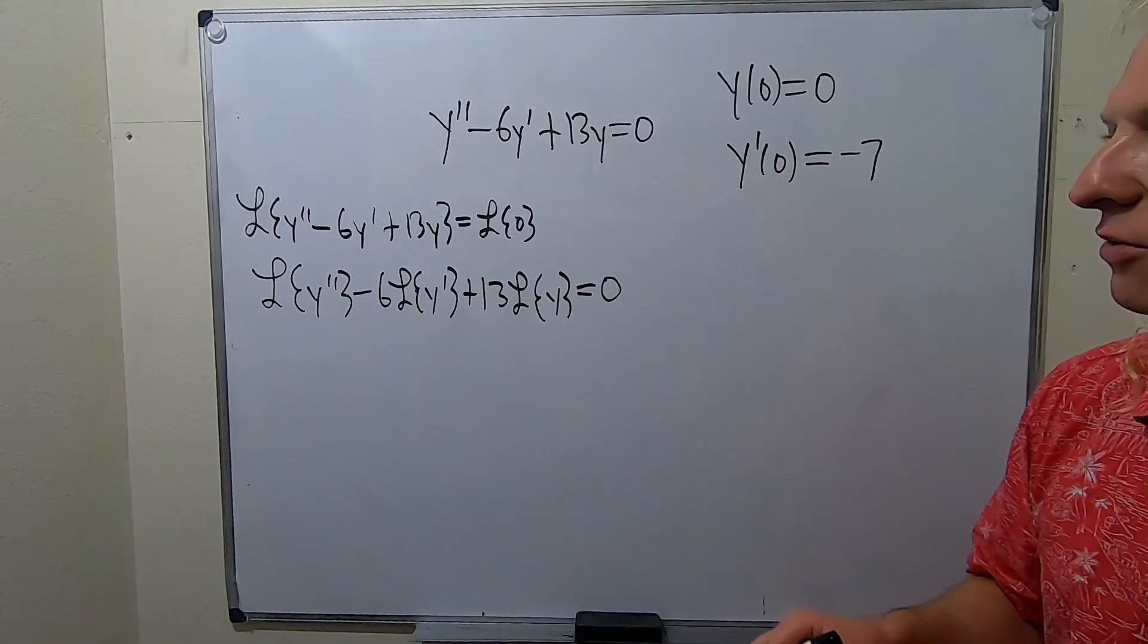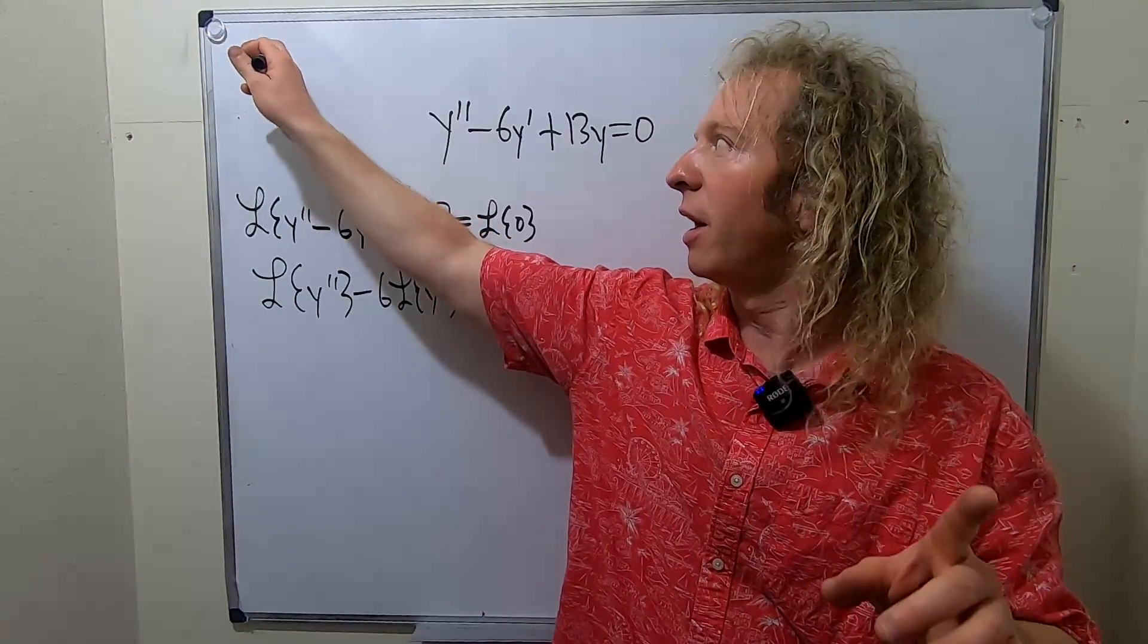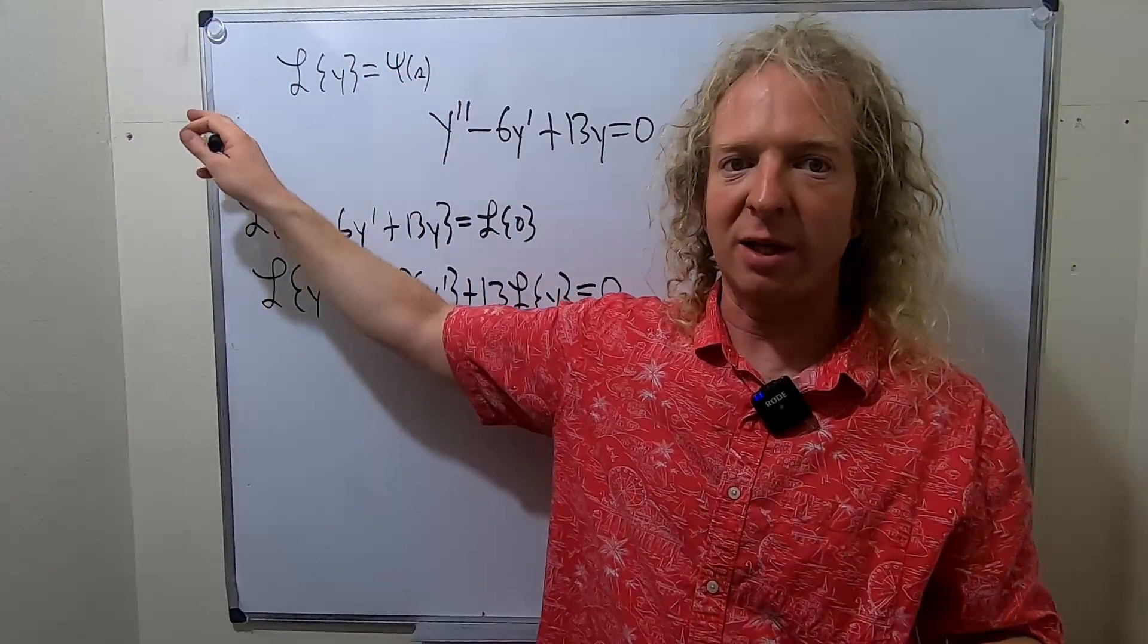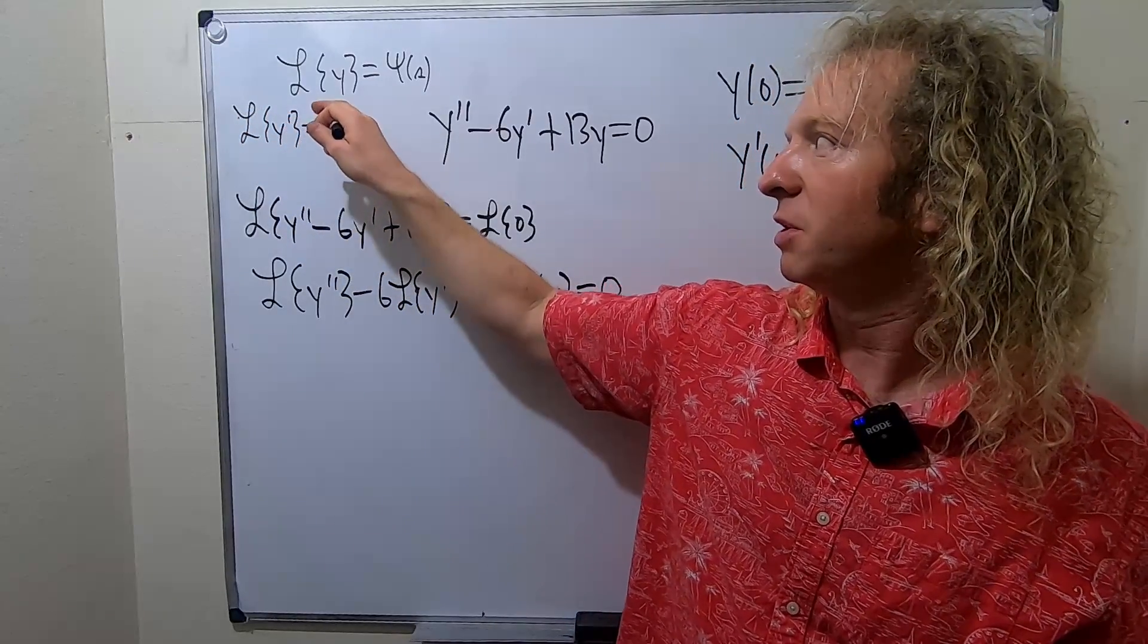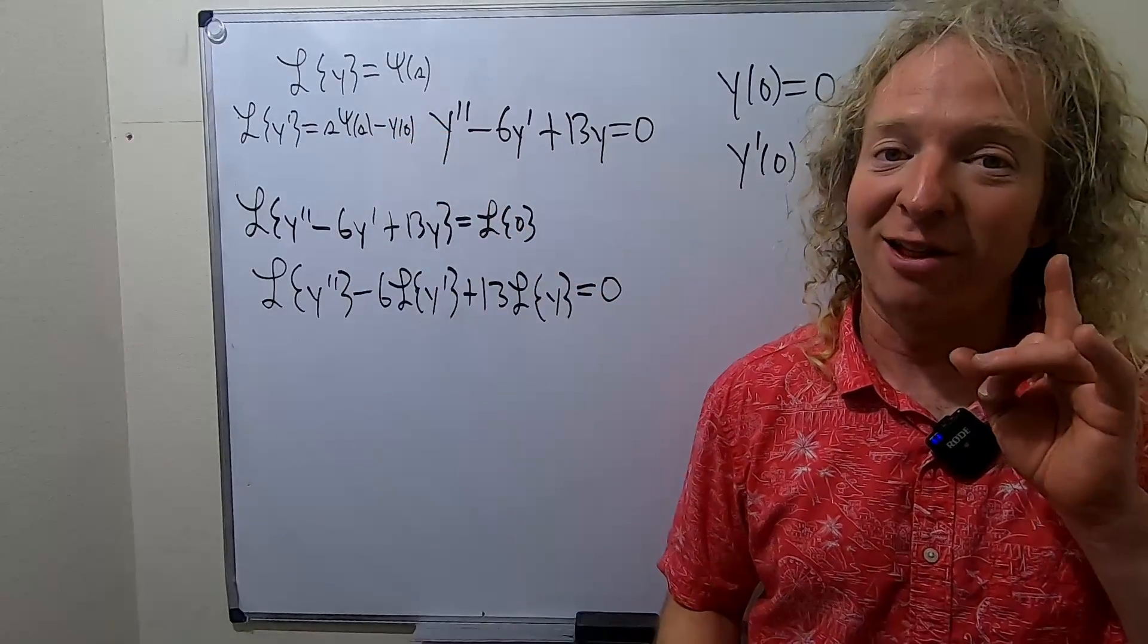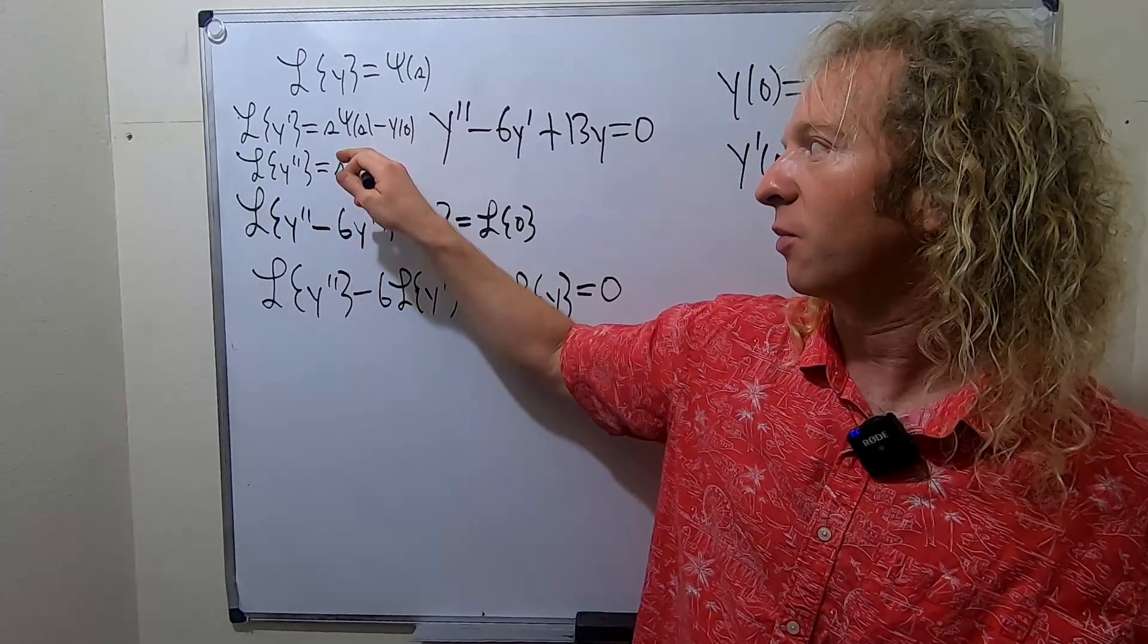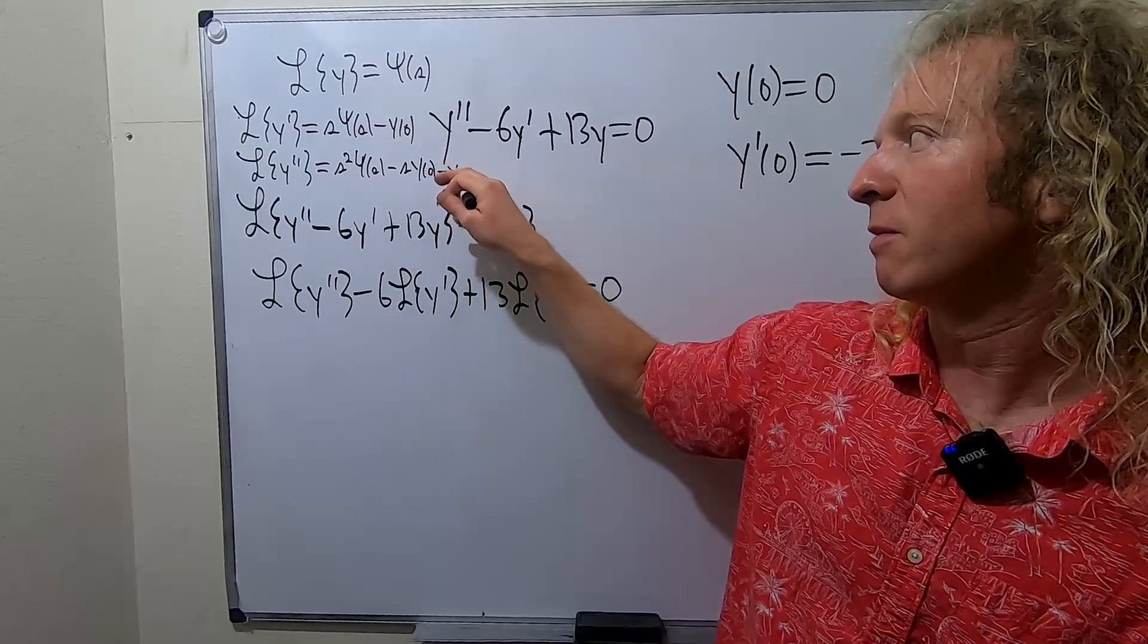So now there are some formulas that you have to use in order to finish this problem. So the first one is that the Laplace of y is equal to pitchfork y of s. So we define it to be that. The second one is that the Laplace of y prime is equal to s pitchfork y of s minus y of 0. Pretty cryptic. And the last one we're going to need in this problem is the Laplace of y double prime. That's going to be s squared pitchfork y of s minus s y of 0 minus y prime of 0.